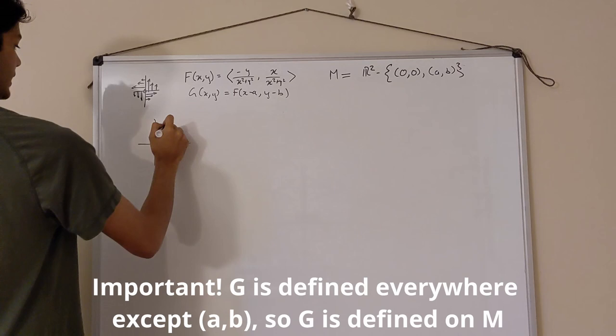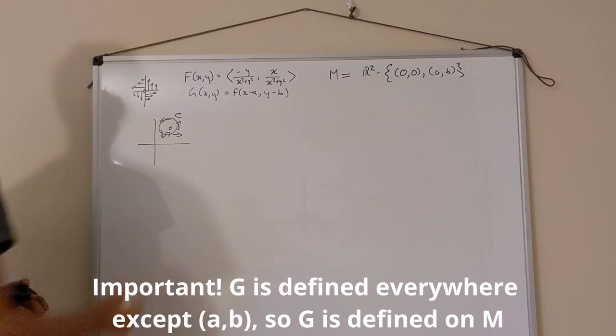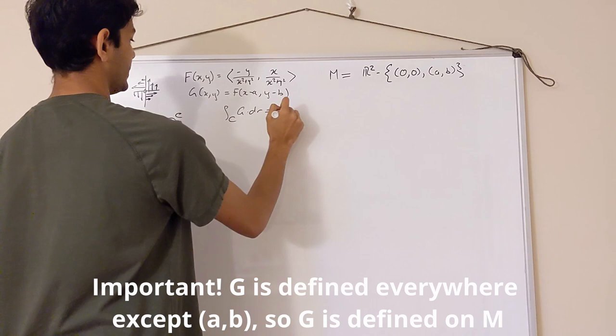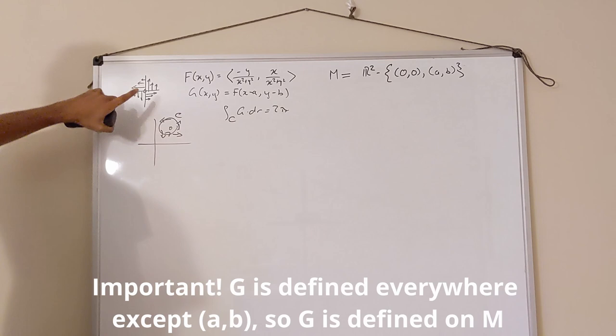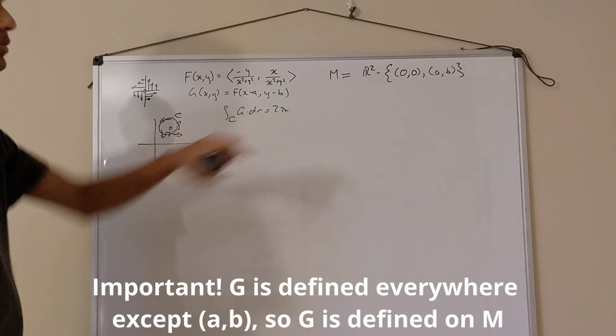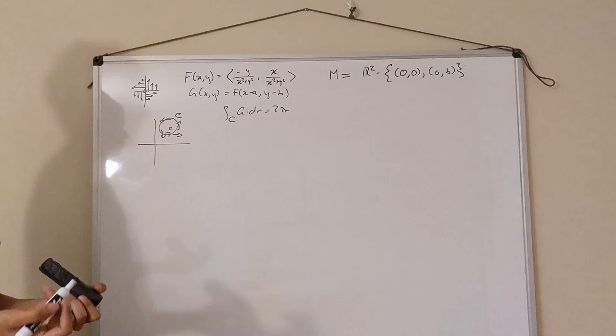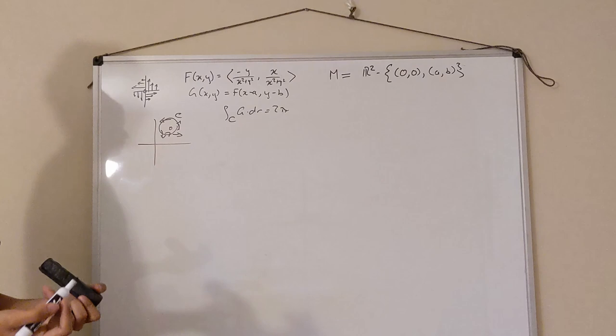If we graph G, with our point (a,b) located somewhere, G looks like a counterclockwise spiral going around (a,b). If we have a loop C going around this point, then the integral over C of G·dr equals 2π, because this is the same as integrating F around a loop at the origin — we've just shifted everything to (a,b). Moreover, curl G = 0 everywhere because G is a translate of F, which has zero curl. So the integral over this closed loop being non-zero means curl G = 0 but G is not the gradient of any function.